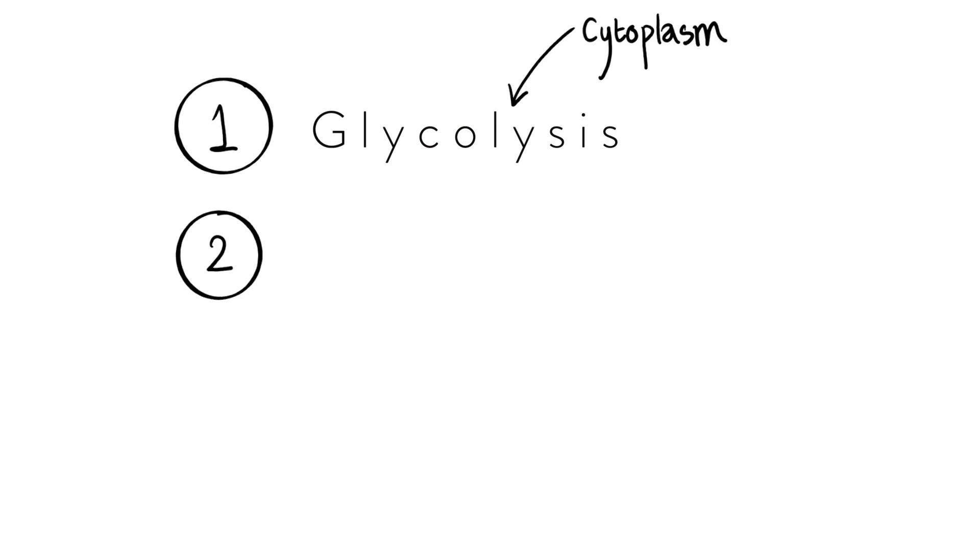The second step, which is sometimes not described as a step in its own right however I am going to do so here and it is called the link reaction and as the name kind of implies it links glycolysis which is the first step to the third step which I'm going to go on to talk about and that is the Krebs cycle. But before we look at the Krebs cycle I'm just going to say that the link reaction takes place in the mitochondrial matrix.